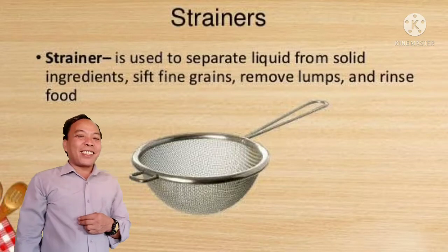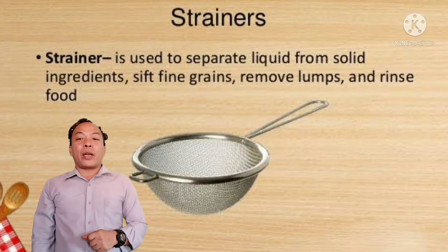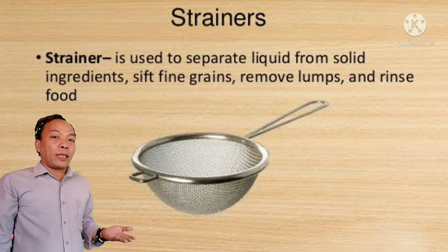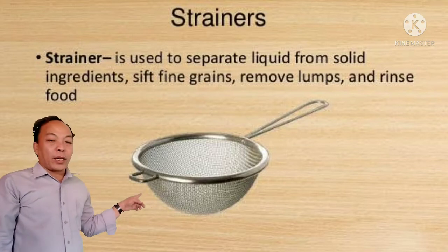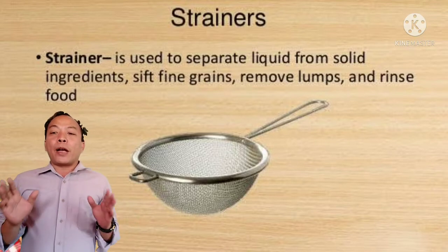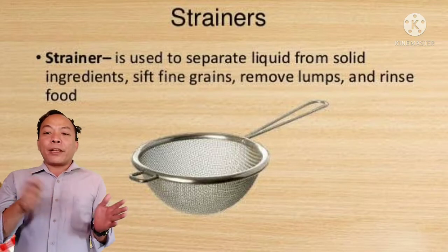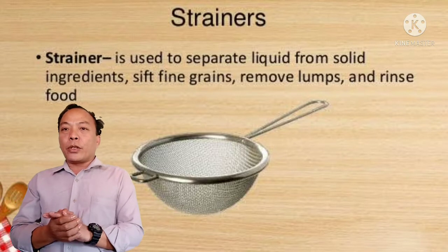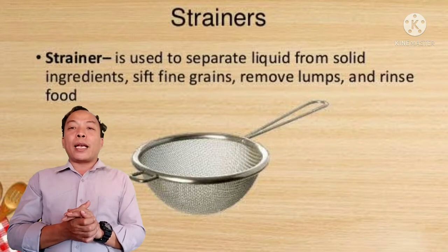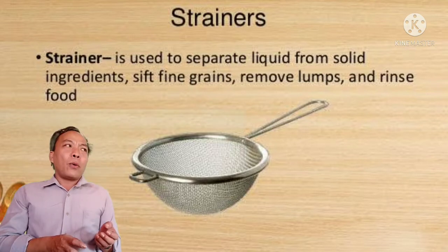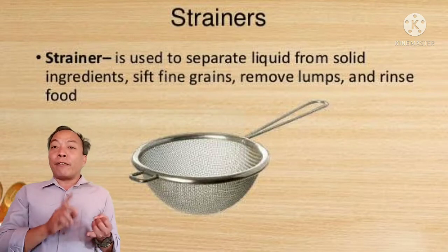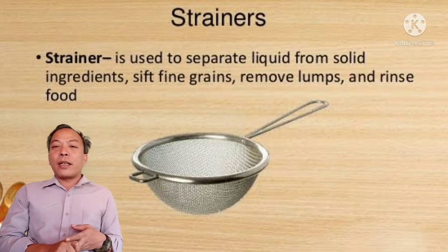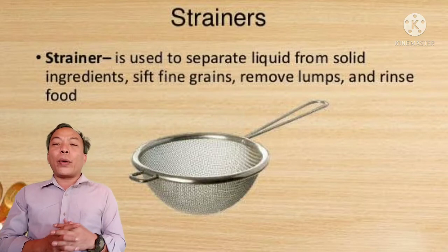The next content covers strainers. There are different kinds of strainers. One common example is the strainer, which is used to separate solid ingredients by sifting — removing fine grains, lumps, and draining food. This is important in the kitchen. What we usually sift includes flour, sugar, cornstarch, and other fine ingredients.